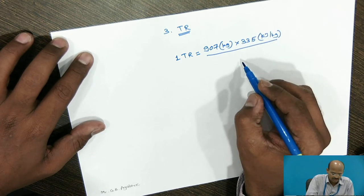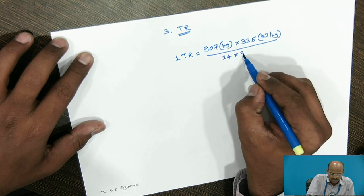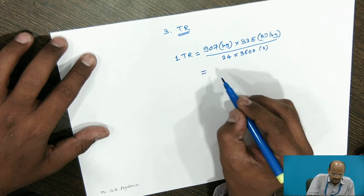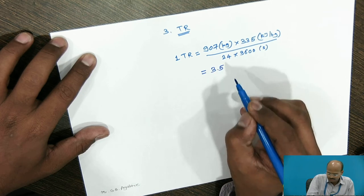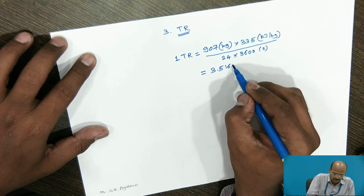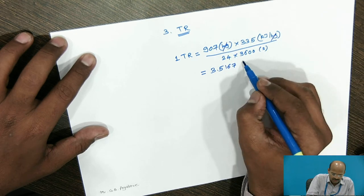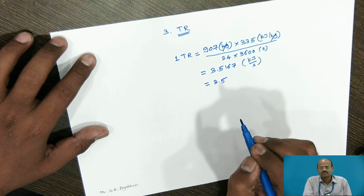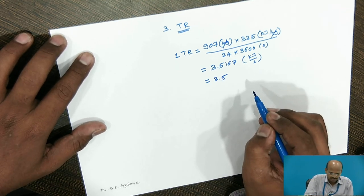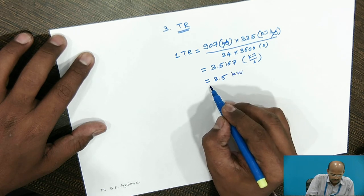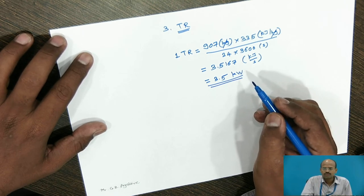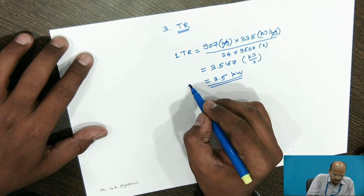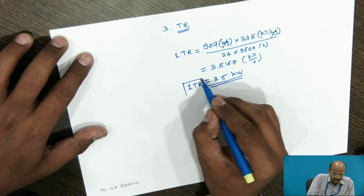1 ton of refrigeration will be equal to 1 US ton water. Here 1 US ton ice is nothing but 907 kg of water. This water is to be converted into ice means latent heat is to be removed from that water which is 335 kJ per kg. In 1 day or 24 hours to be converted into seconds. If we will do the calculation, then we will get the exact figure as 3.5167. Here kg kg will get cancelled, the unit will be kilo joule per second nothing but 3.5. For all calculations in refrigeration and air conditioning we will take 3.5 kW.